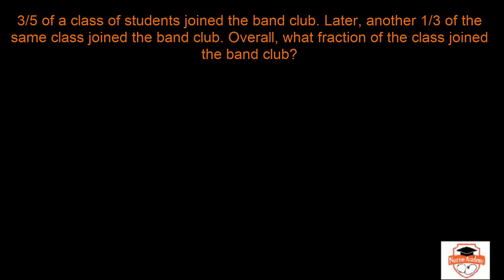So you have 3/5 of a class joining the band club and then later 1/3 of the same class joining the band club. So overall, the fraction of the class that joined the club would obviously be 3/5 plus 1/3.